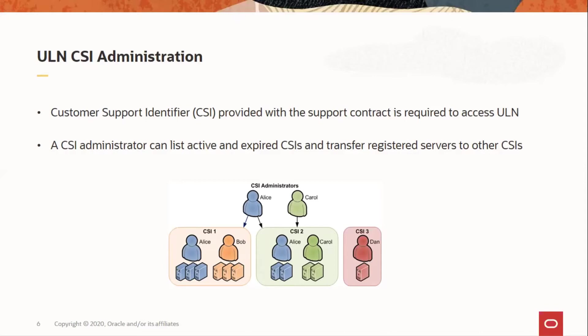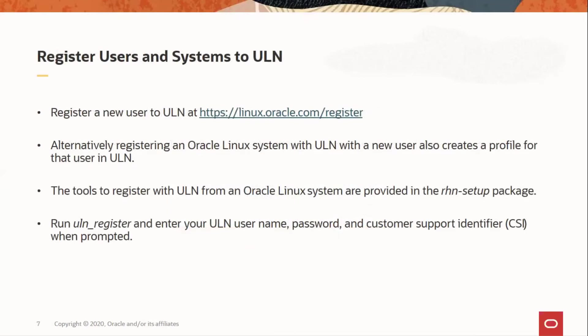This image shows how a single administrator can manage multiple CSIs and also how a single CSI can have multiple administrators. A new user can be registered to ULN by going to linux.oracle.com/register. If a user is not registered in ULN and a new system is registered to ULN with that user, a profile is automatically created for that user in ULN. To register a system to ULN, the RHN setup tool is used. By running the ULN register command and providing the username, password, and the CSI when prompted, a system can be easily registered to ULN.